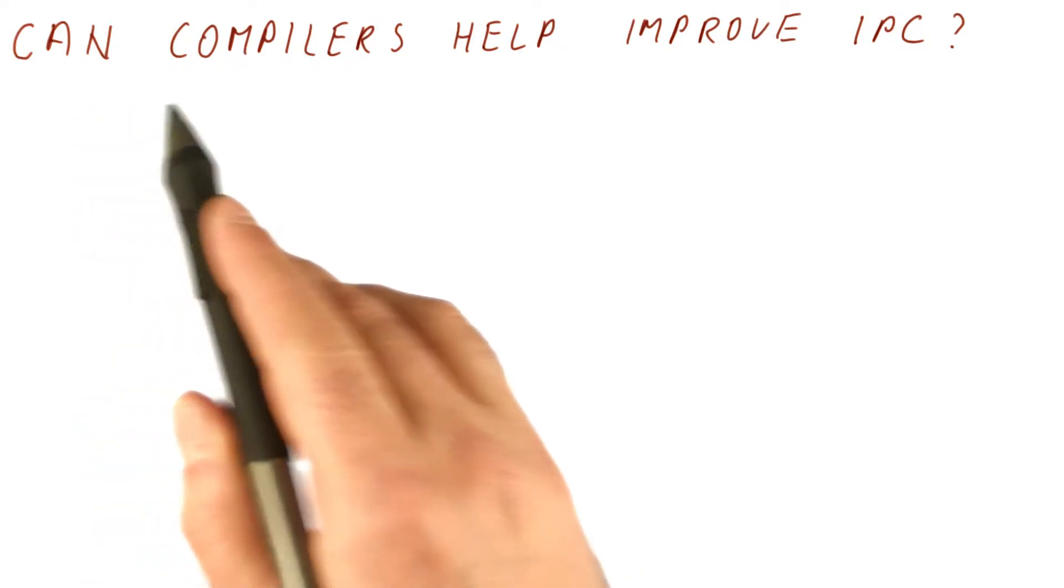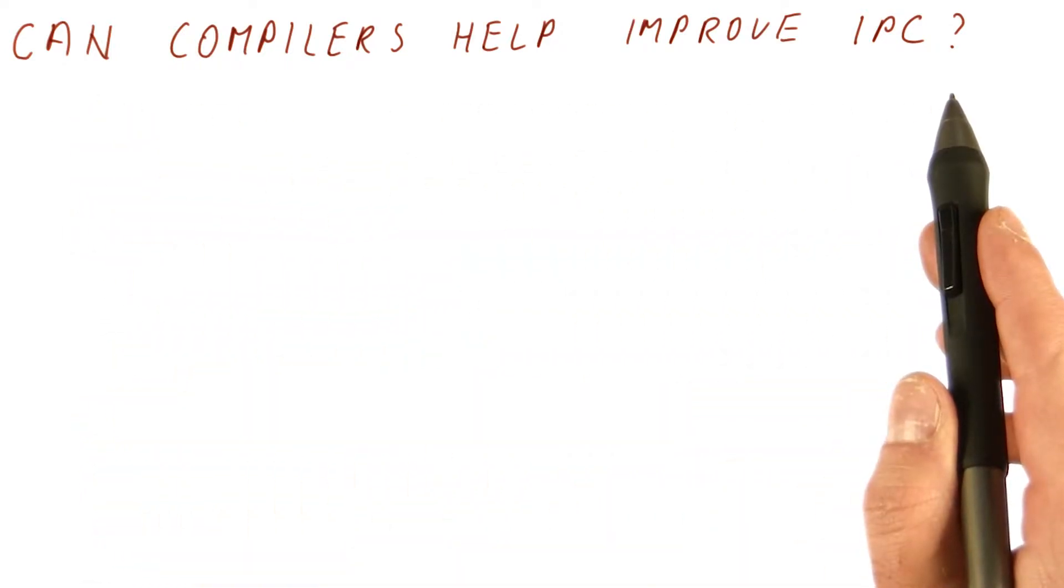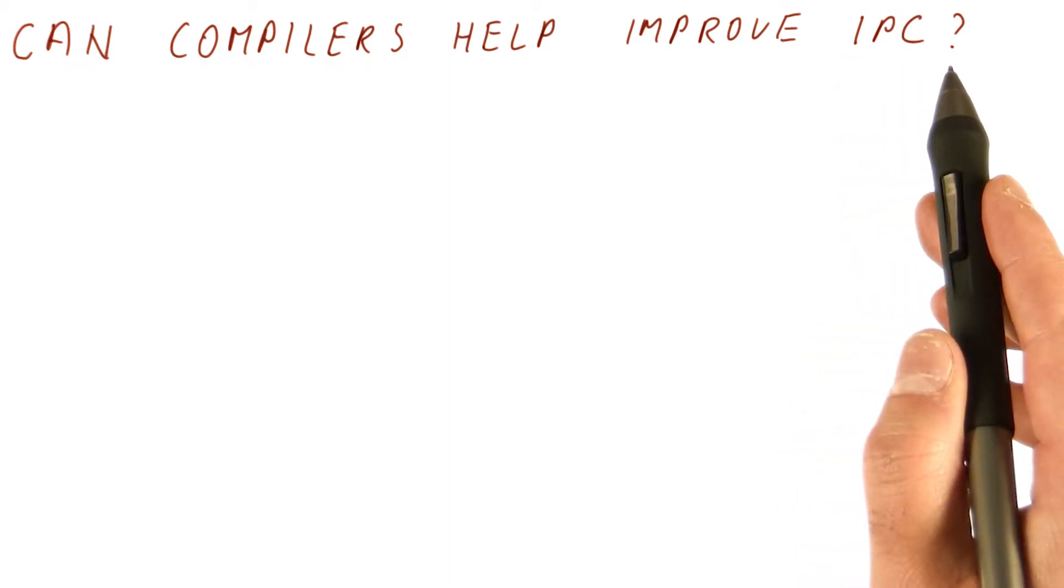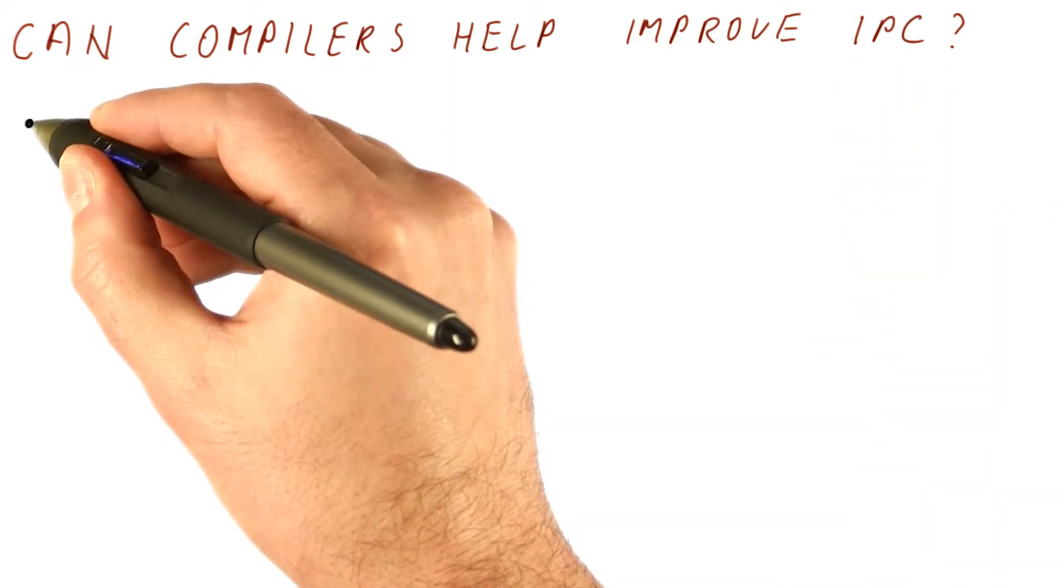So let's discuss, can compilers help improve IPC, which is the number of instructions per cycle that the processor achieves?